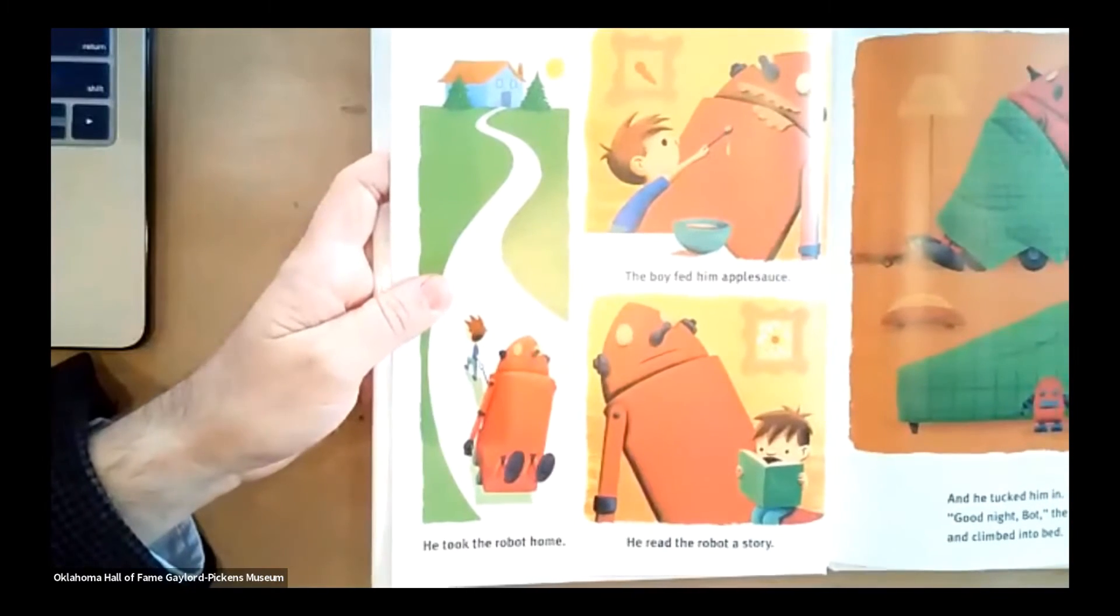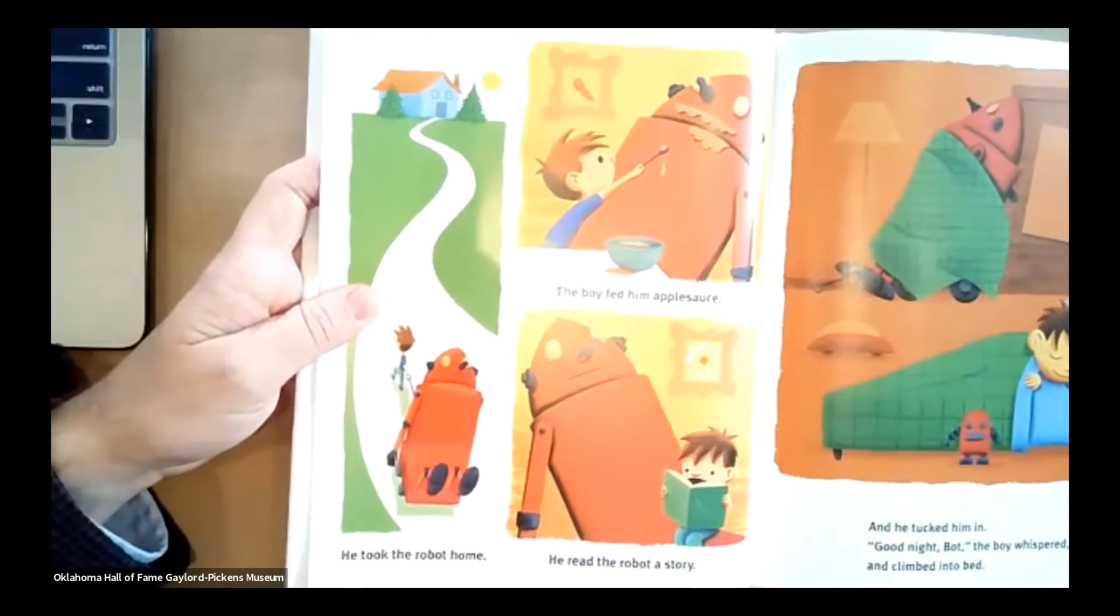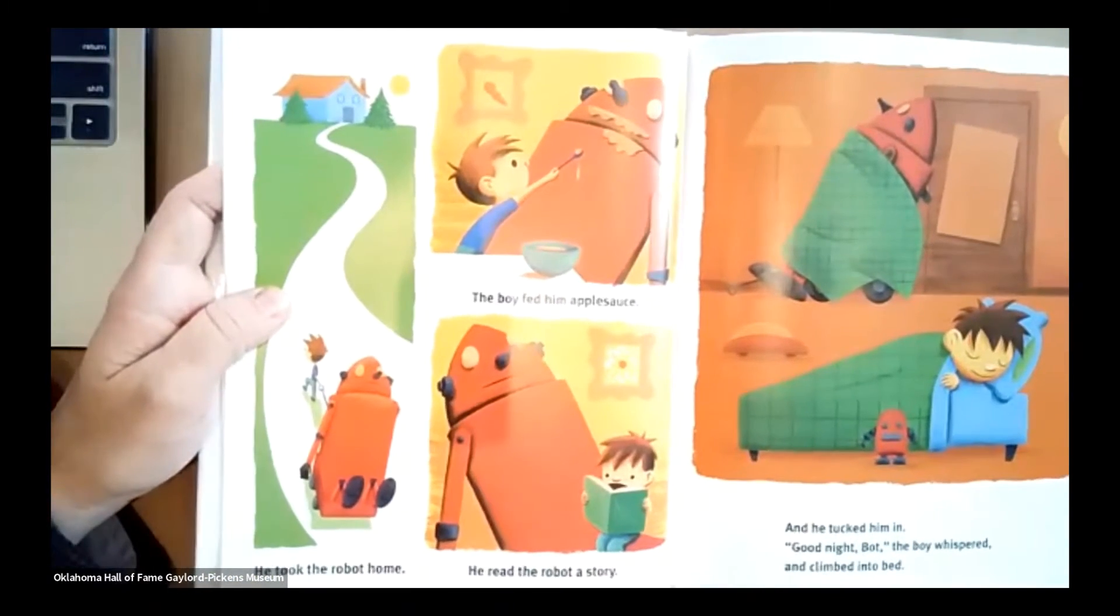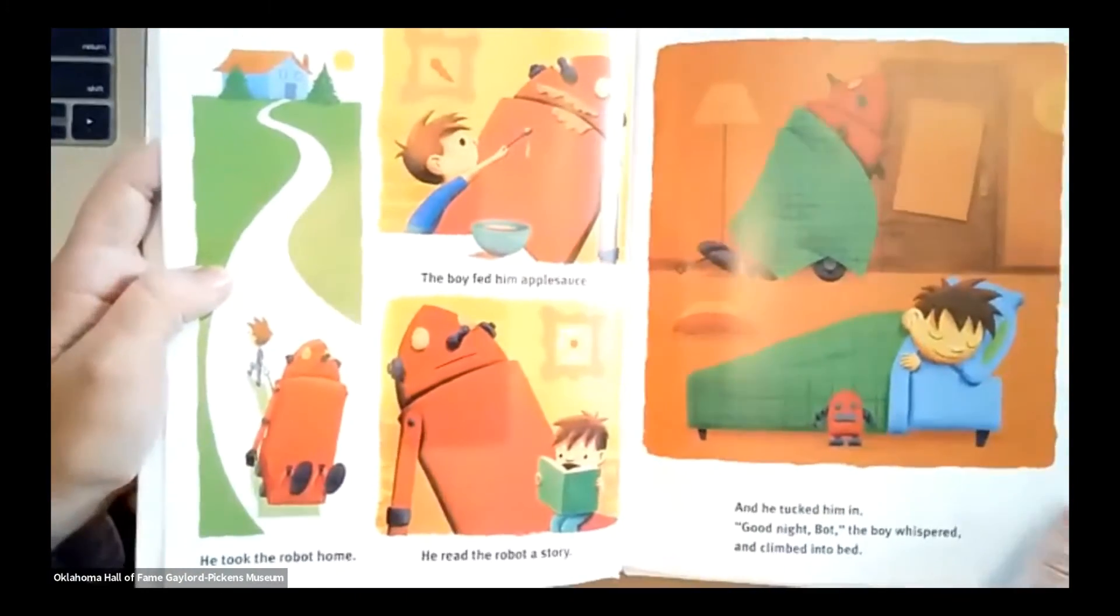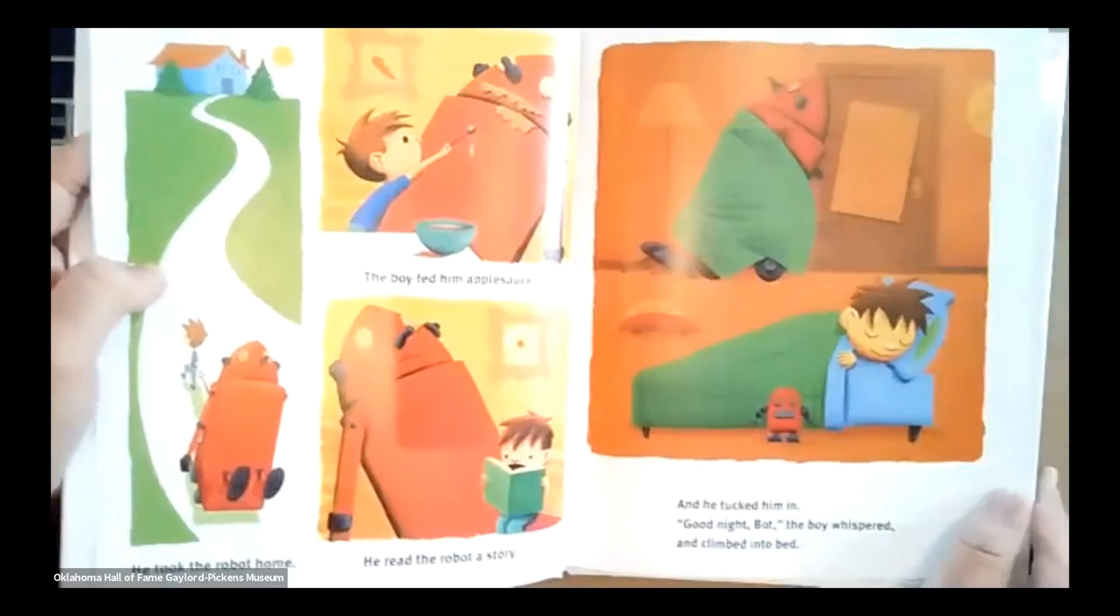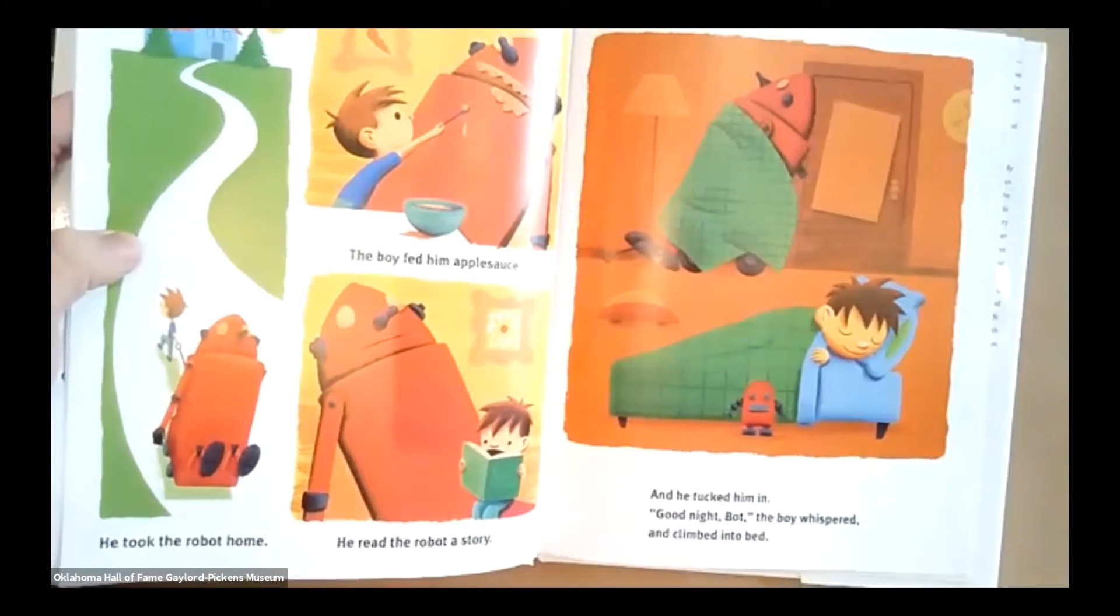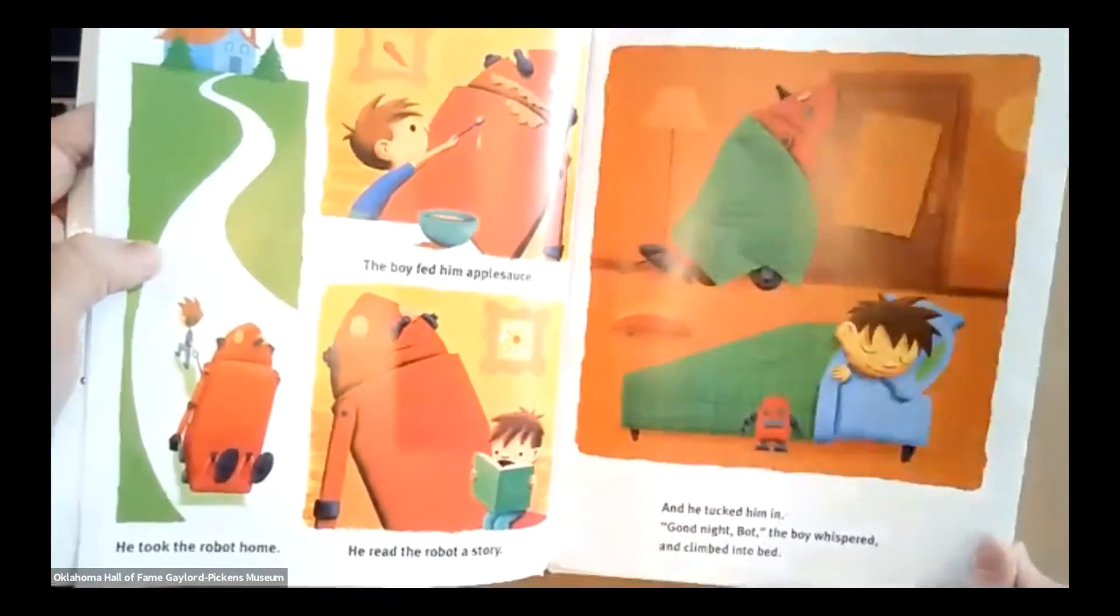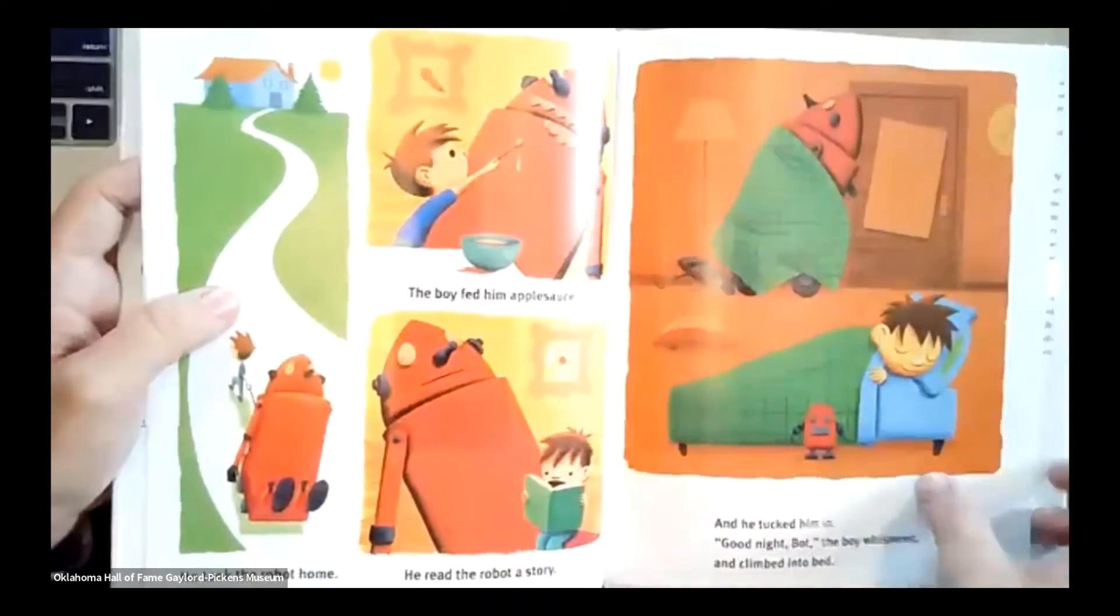He took the robot home. The boy fed him applesauce. Oh, wow. And he read the robot a story. Oh, that's very nice. It's probably how he would want to be taken care of if he were sick. And he tucked him in. Good night, Bot, the boy whispered and climbed into bed. So he gave the robot a blanket.